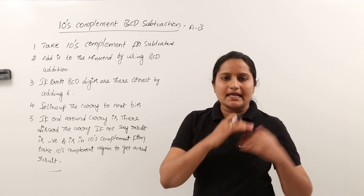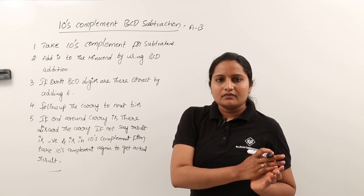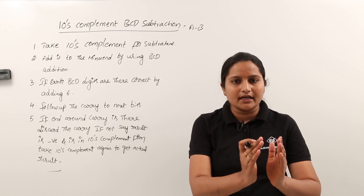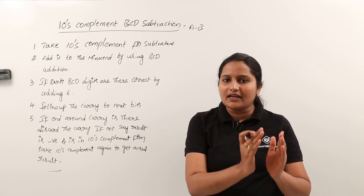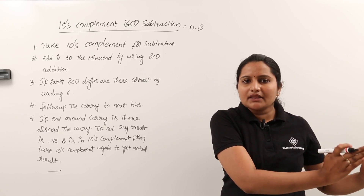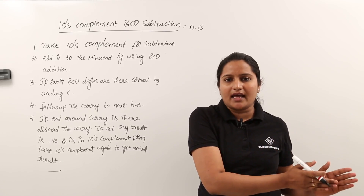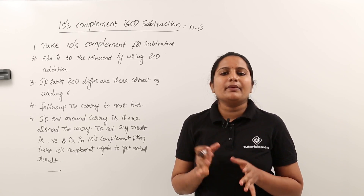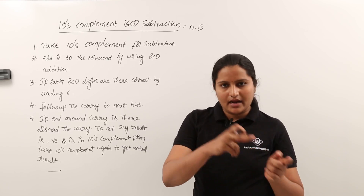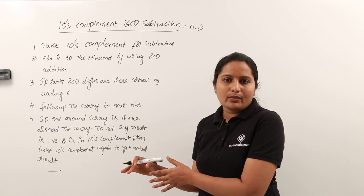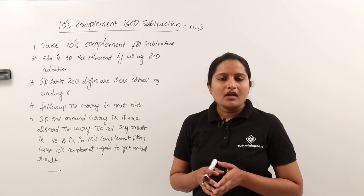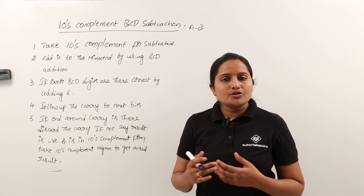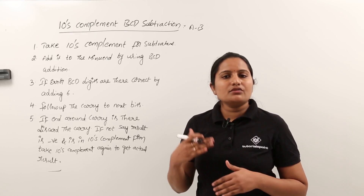Finally, after following up carries, if there is an end around carry — for example if the last bit produces a carry — in ten's complement subtraction we simply discard that carry. In nine's complement we would add it to the result, but in ten's complement we discard it. If there is no end around carry, the result is negative and is in ten's complement form; take ten's complement again to get the actual value.